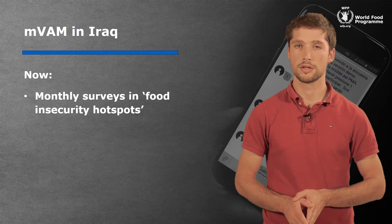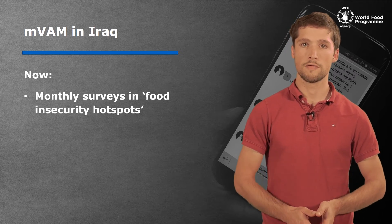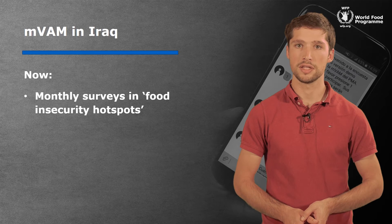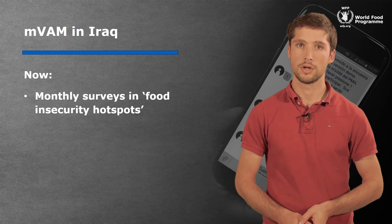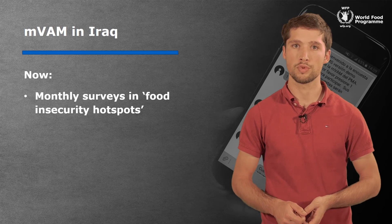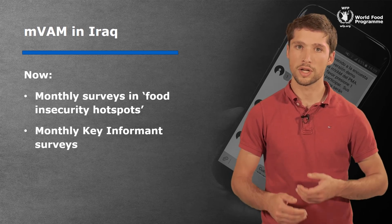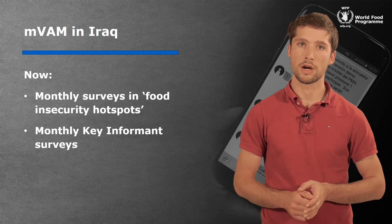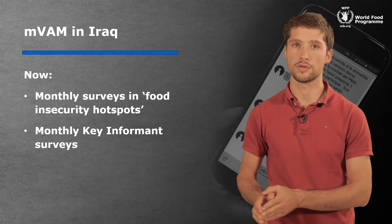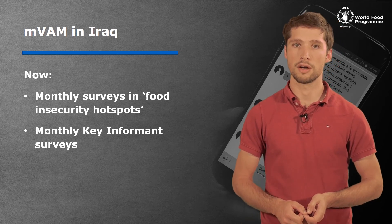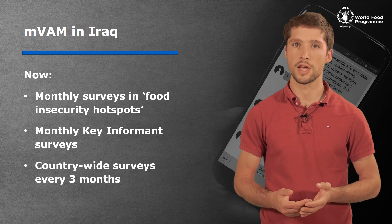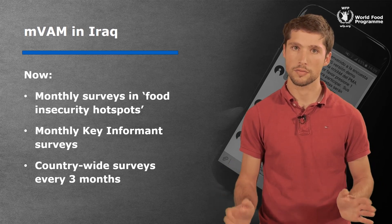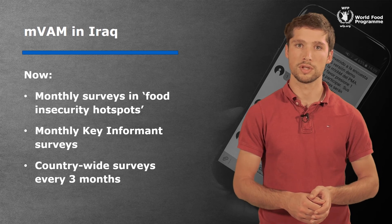We also realized that when contacting random households through the mobile network, we couldn't reach some occupied cities such as Ramadi, Mosul, or Fallujah. With the help of a local NGO, we managed to set up a network of key informants in those cities to get regular information on food supply and prices. Today, we carry out monthly hotspot and key informant surveys to get dynamic information from these volatile areas, while still doing the nationwide survey every three months to maintain an up-to-date picture of the food security situation everywhere and identify any new areas producing particularly different results.